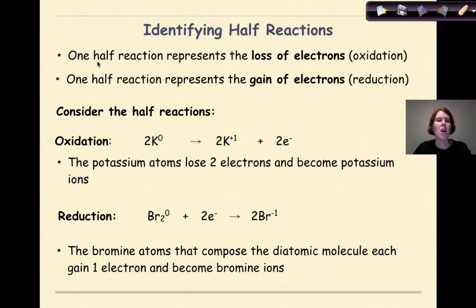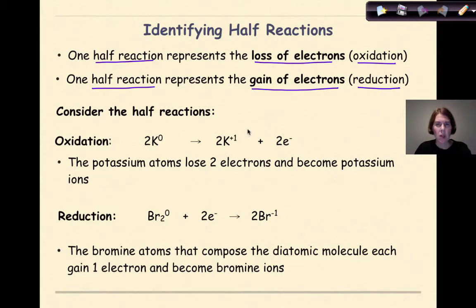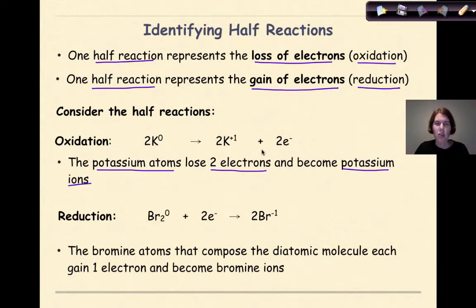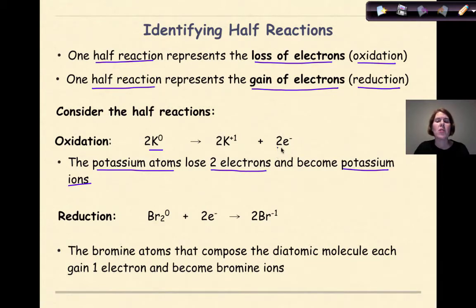When we identify half-reactions, one half-reaction is going to represent the loss of electrons, otherwise known as oxidation, and the other half-reaction is going to represent the gain of electrons, otherwise known as reduction. So if we think about potassium plus bromide gives us potassium bromide, we look at the potassium atoms — they're going to lose two electrons and become potassium ions. Here's potassium with an original charge of zero. When the individual potassium atoms lose their one valence electron, they become K⁺¹. Collectively, between the two of them, they're going to lose a total of two electrons.